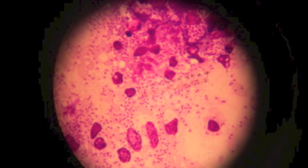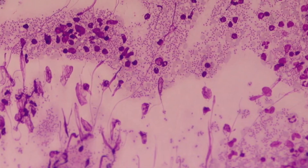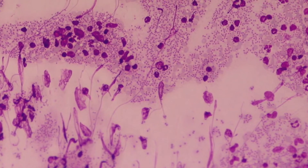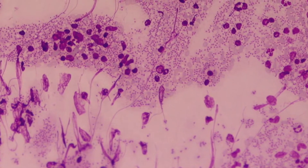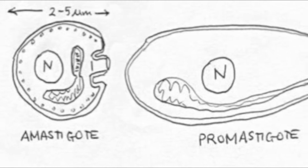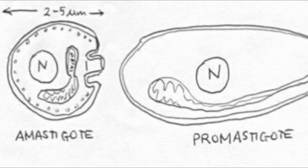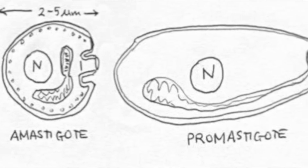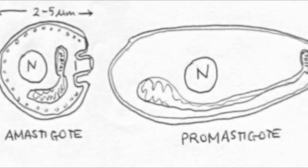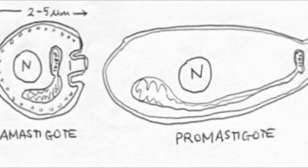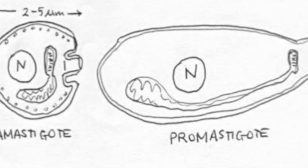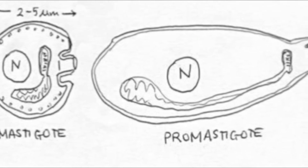The parasite exists in two forms: the amastigote, found in man, and the promastigote, found in the digestive tract of the sandfly.